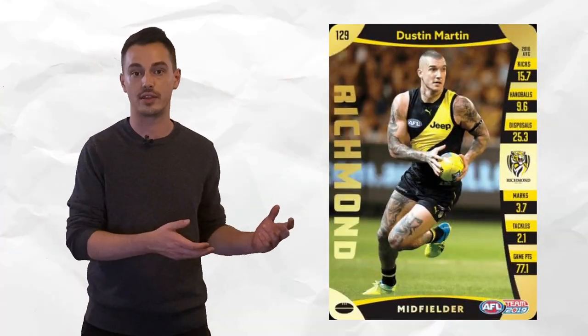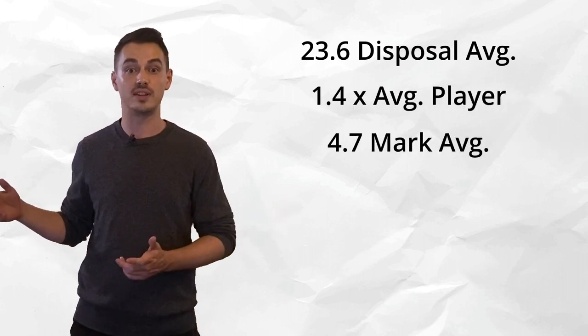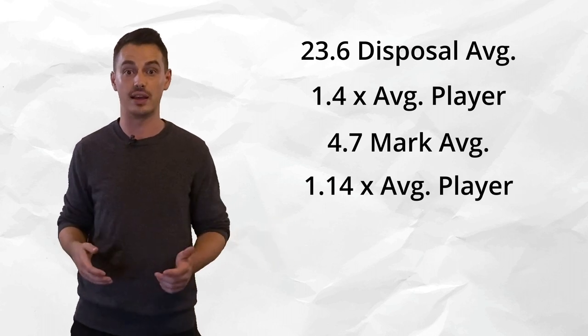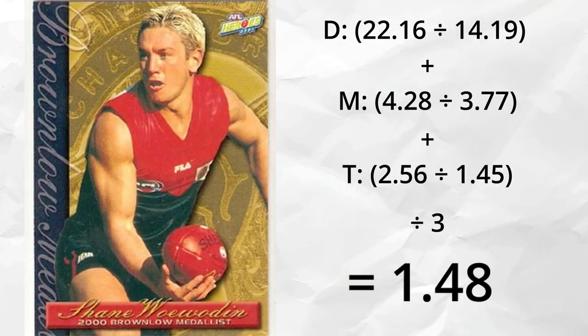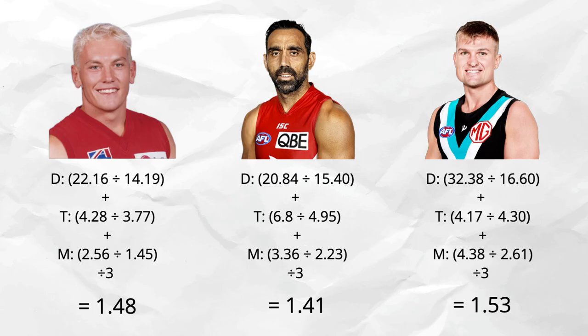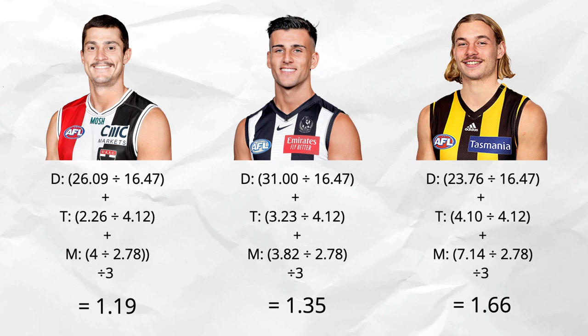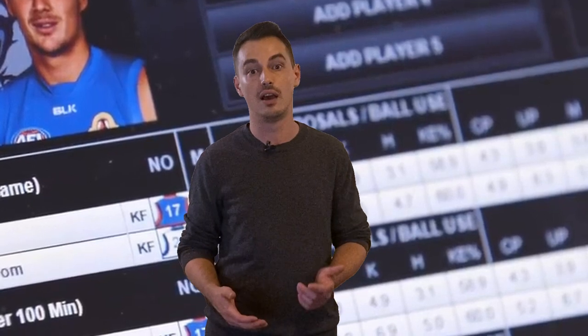For example, Dustin Martin in 2023 averaged 23.6 disposals — that's 1.4 times the average player. He averaged 4.7 marks, which is 1.14 times the average player, and 1.9 tackles per game, or 0.6 times the average player. With that, these are some previous Brownlow winners' season averages the year that they won. Adjusted to today's competition, these would be their averages, and these are some players in 2023 that had similar or better years. While my version isn't a perfect analysis, it's at least an attempt. I'm already thinking I need to include goals, as Dustin Martin's Brownlow dominance isn't reflected very well when comparing against other Brownlow medalists.